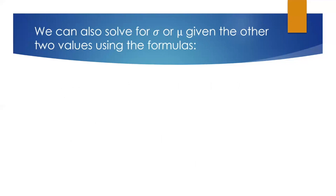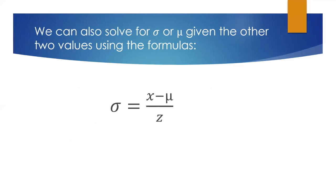We can also solve that formula for sigma or mu given the other two values. Sigma would be equal to x minus mu over z, and mu would be equal to x minus z times sigma.